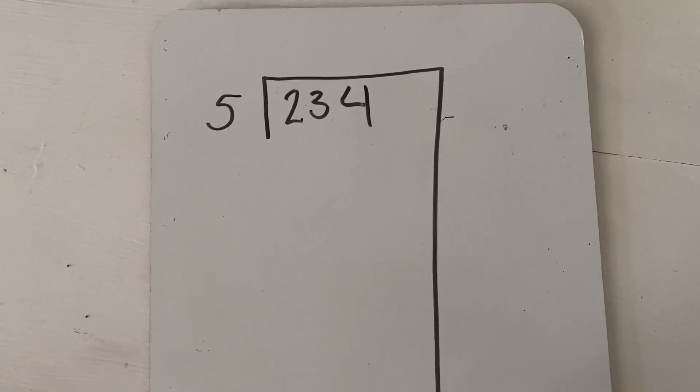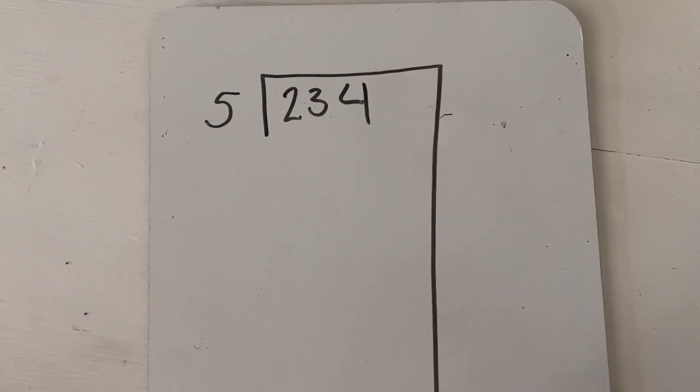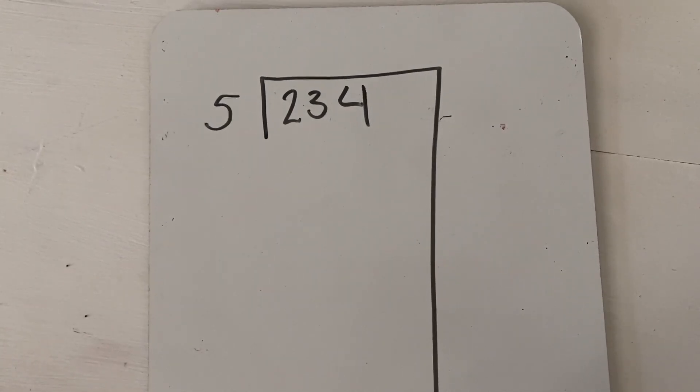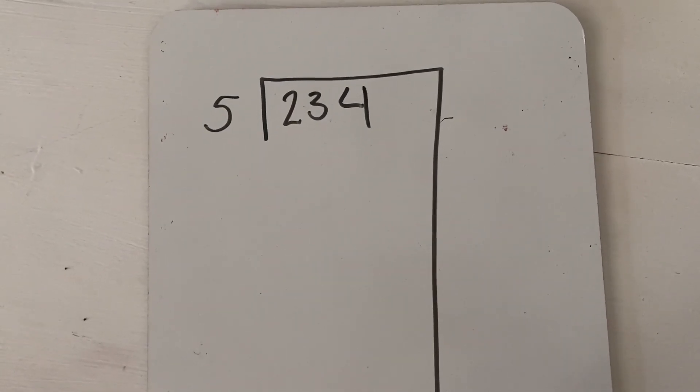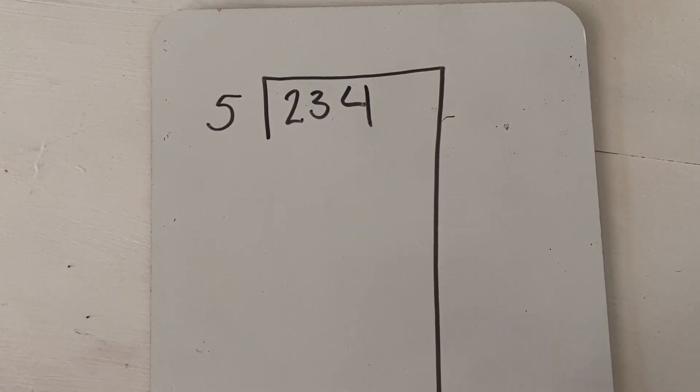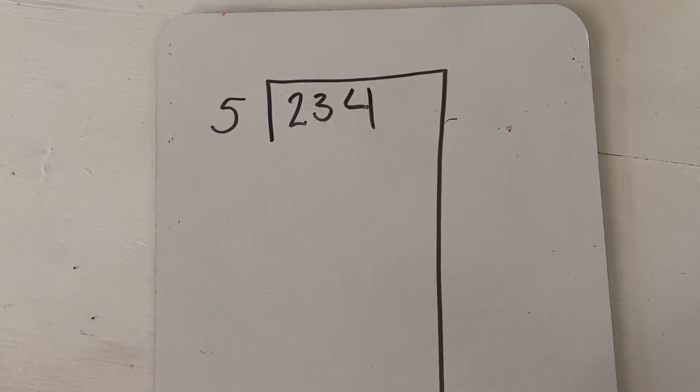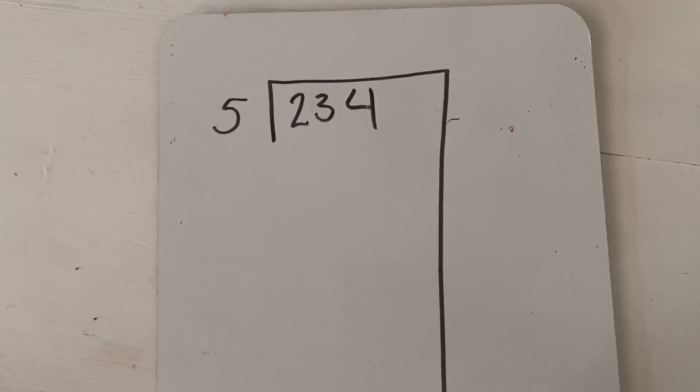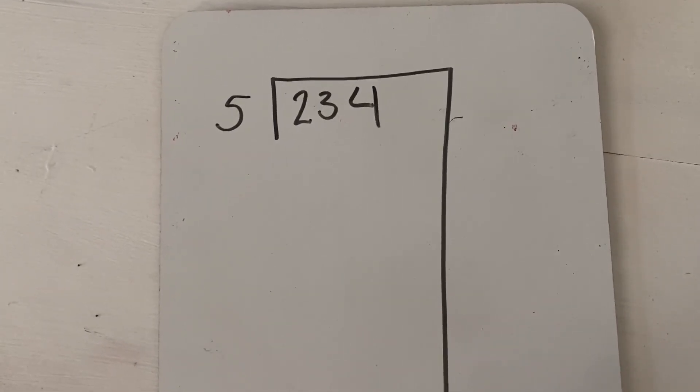Partial quotients method for long division is really nice because it makes sure that students can't really mess up. In long division, if you accidentally don't put enough groups in, then you could end up messed up in your answer later on and really have to restart, or at least restart partway from where you made your mistake.